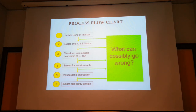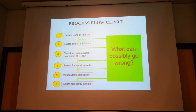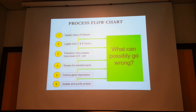To recap the process flow chart: you first isolate your gene of interest, secondly ligate onto the cloning/expression vector, transform, screen, induce gene expression, and purify your protein. At every stage things can go wrong. When you isolate your gene of interest, it may be incompatible with E. coli. Sometimes the RNA transcript produced by the gene of interest in E. coli may downregulate certain processes. Sometimes they may have palindromic sequences so your RNA transcript folds on itself due to complementarity between the 5' and 3' ends, preventing protein expression.